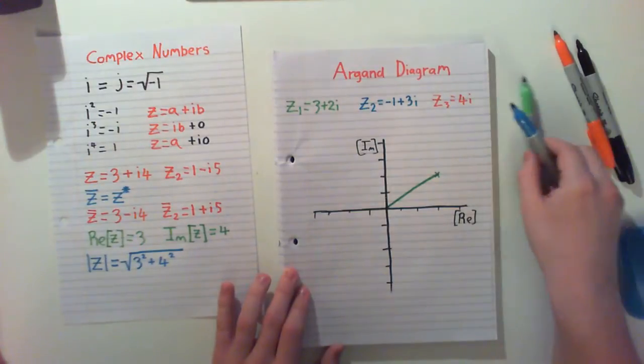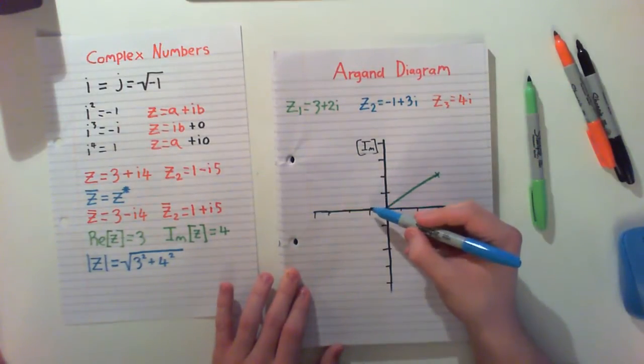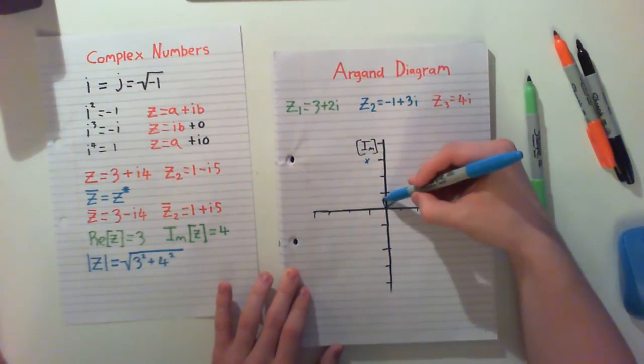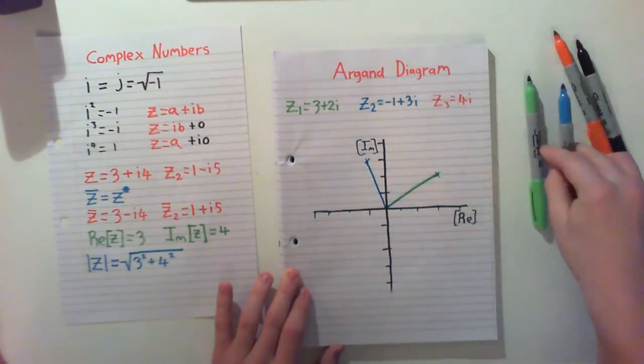For our next one, we have minus 1 in the X and we have 3 in the Y, so our point is just here. And again, from the origin and up.